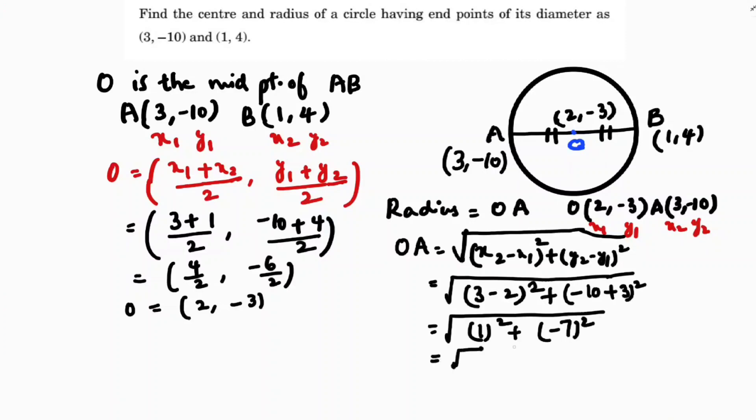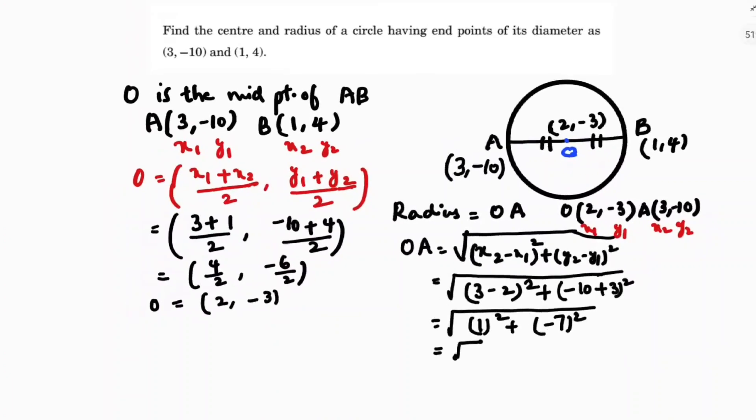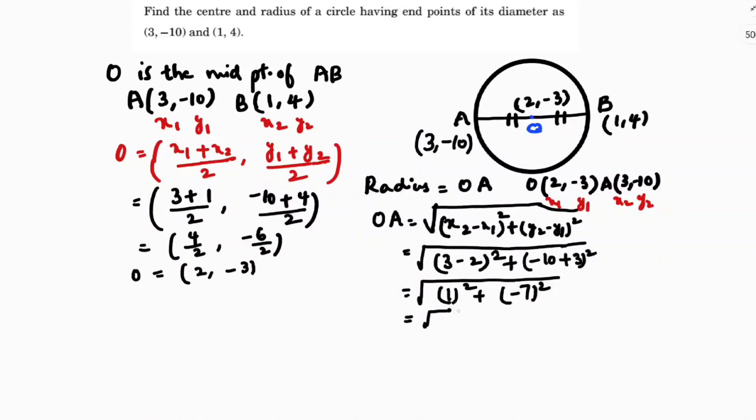So which is nothing but 1 square is 1. -7 whole square is 49. So you will get √50.